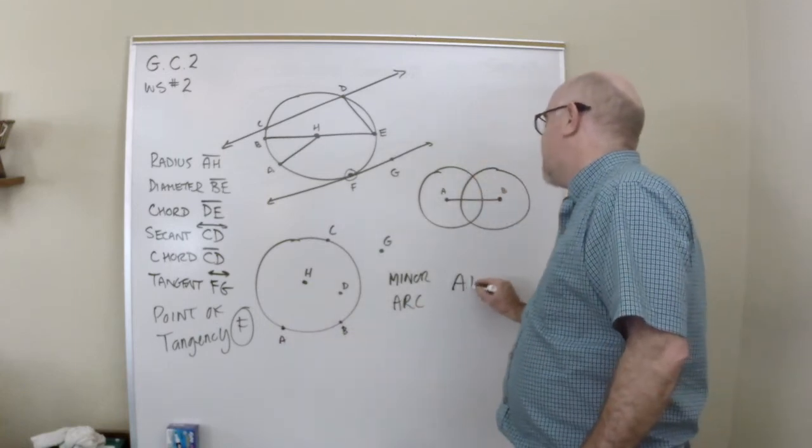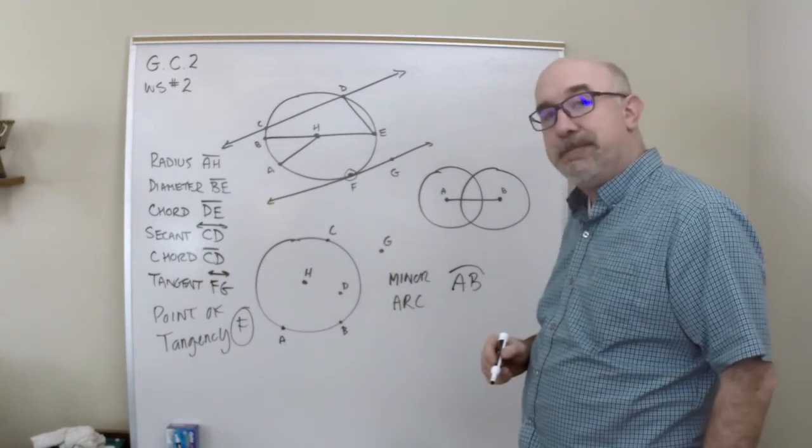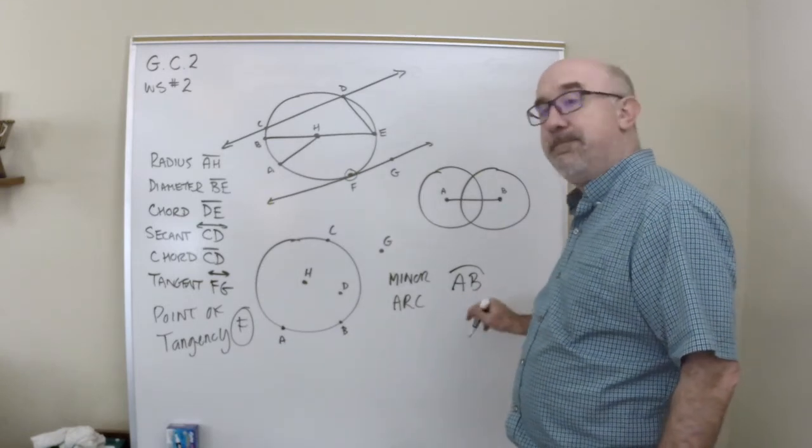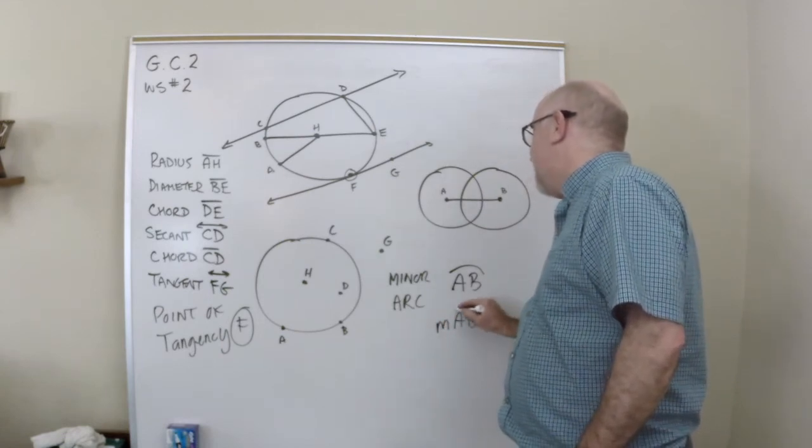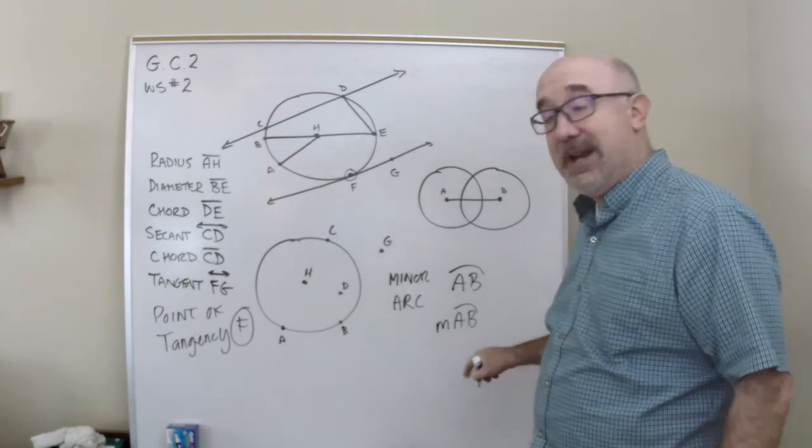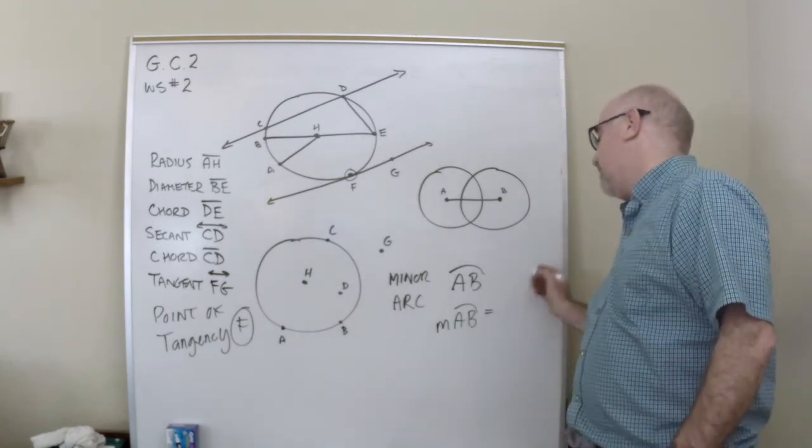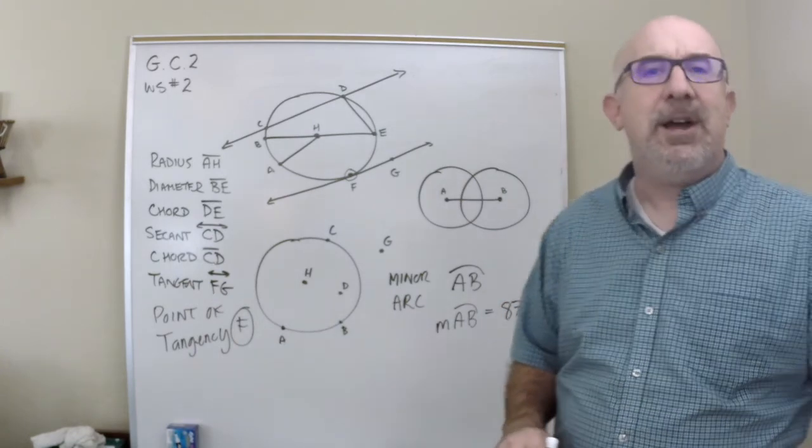And we name it just like this, with like an arc symbol, the way you would expect it. This says, arc AB. If we wanted to tell how big it is, we would talk about the measurement of arc AB, like we do the measurement of an angle. So, we would say equals, I don't know, 87 degrees or something like that.